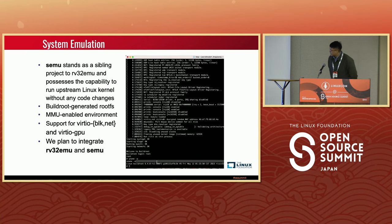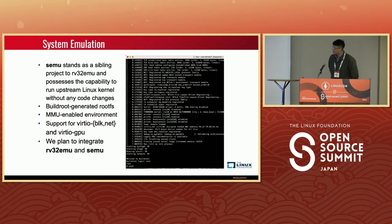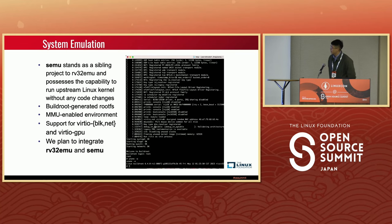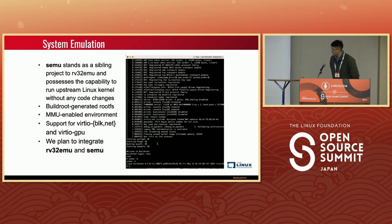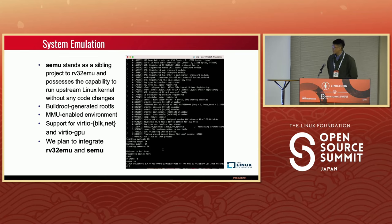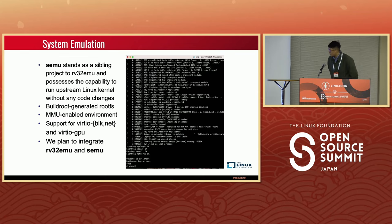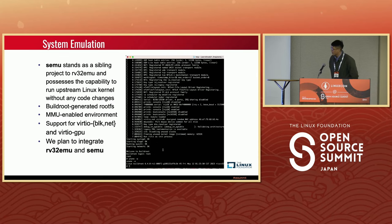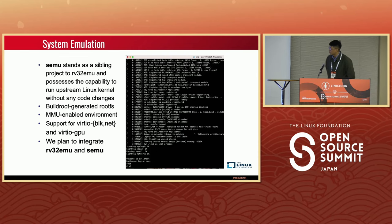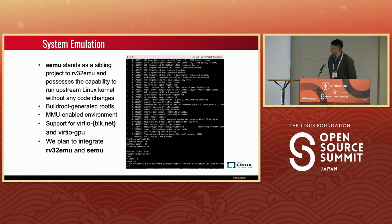In addition to RV32EMU, we have another system emulation project called CEMU. As shown in the video, the RISC-V Linux kernel can run smoothly on CEMU without any code changes. CEMU supports memory management unit environments and virtual I/O and virtual GPU. Considering development, we separated RV32EMU (instruction set simulator) and CEMU (system simulator) into two projects, but we recently plan to integrate them.